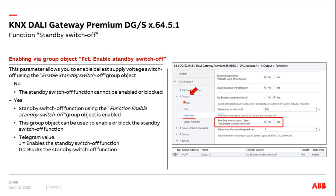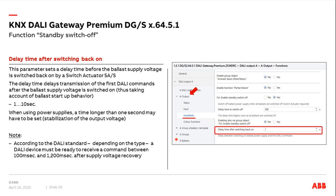You can also enable or block the standby switch-off function — for example, during the day, so only overnight the standby function is activated by the gateway. We can use a group object with value 0 to block it during the day and enable it in the evening. With group object 67, 'Function Standby Switch-Off Enable or Block': value 1 enables the function and value 0 blocks it. The delay time after switching back on defaults to one second; for power supplies, two or three seconds may be recommended.